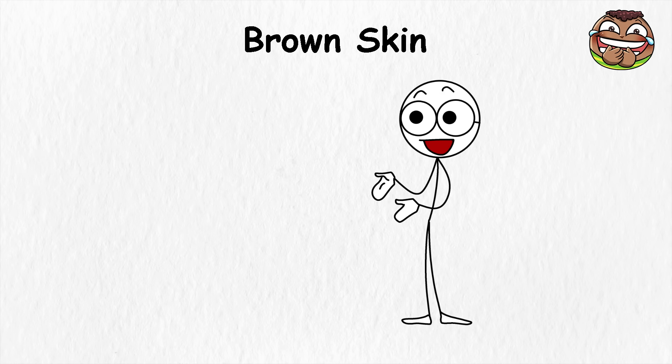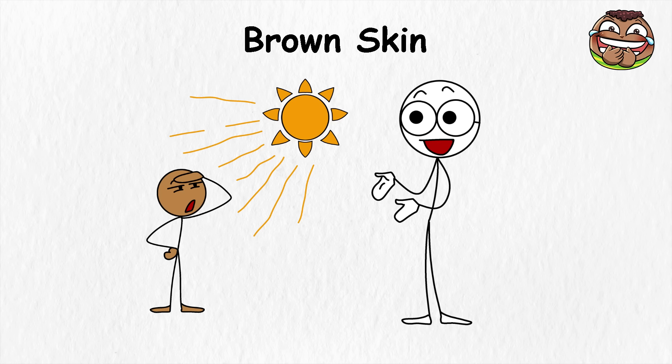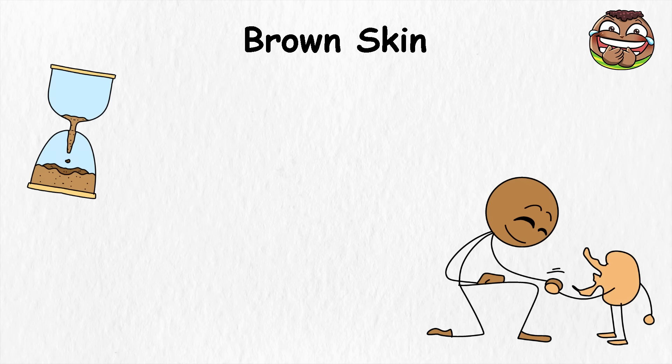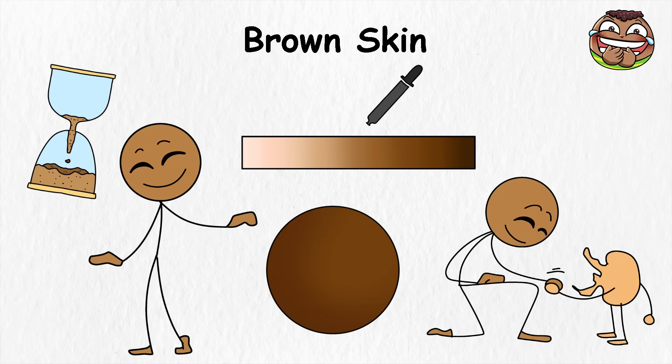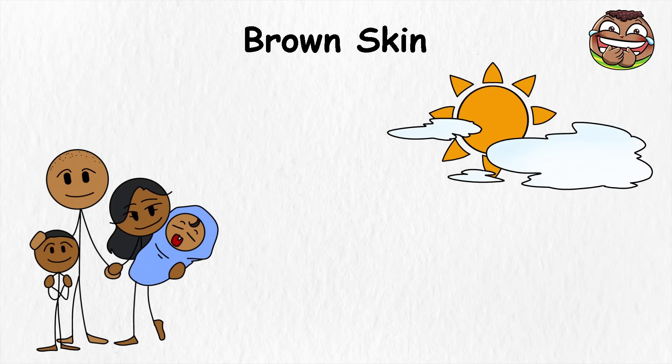Brown skin is most common in places close to the equator, where the sun is intense almost every day. In that kind of climate, people needed stronger natural protection, and higher melanin gave it to them. Over time, that's how this shade developed. But it doesn't all look the same. Brown skin can run from light golden tones to much deeper shades, shaped by local weather, family lines, and geography.